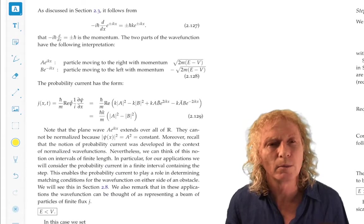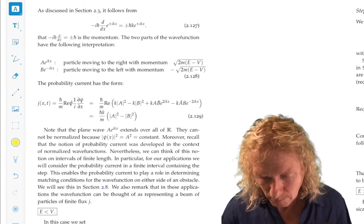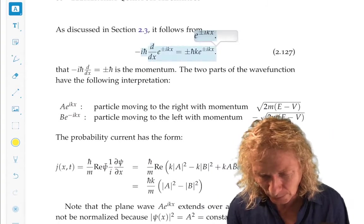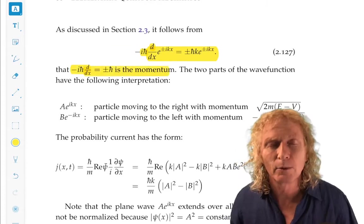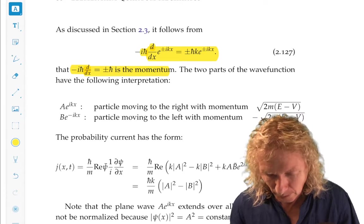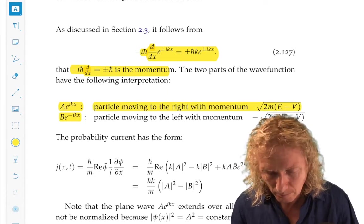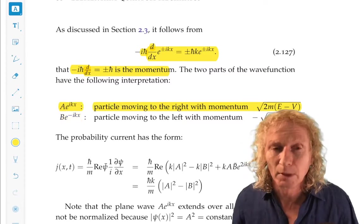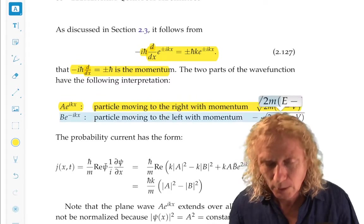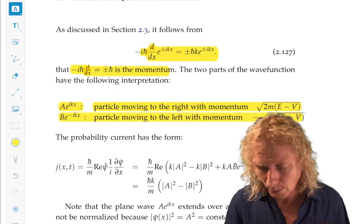If this wave function models the motion, and I'm just rehashing what I just said here, it models the motion of a quantum particle on the real line. Then this term corresponds to a particle moving from left to right with its momentum, and this term corresponds to a particle moving from right to left with its particular momentum.